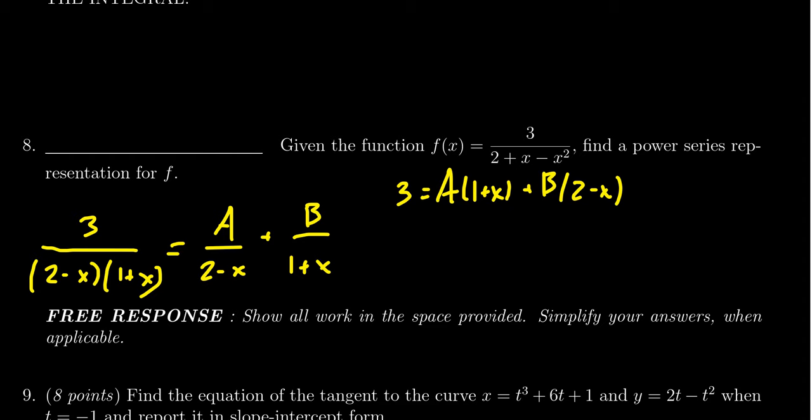And so attempting to annihilate values of x here, we could first start off with x equals 2. That would annihilate the B right here. And that would leave us with 3 equals 3A. That is A equals 1. That's nice.